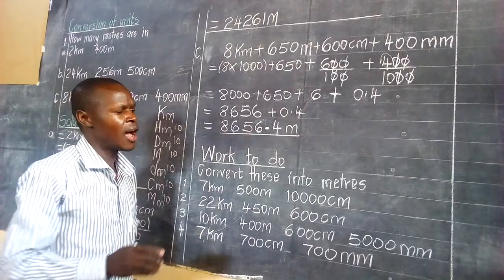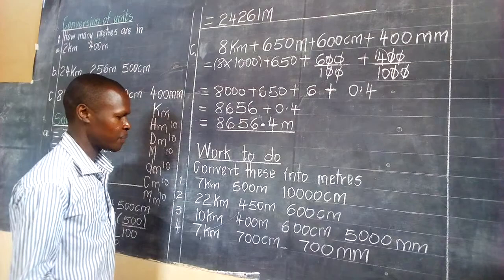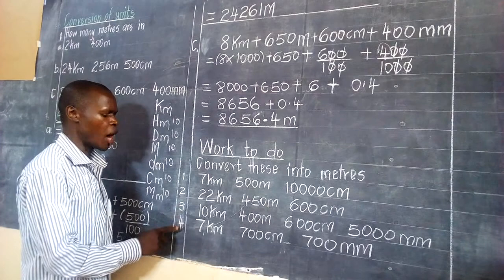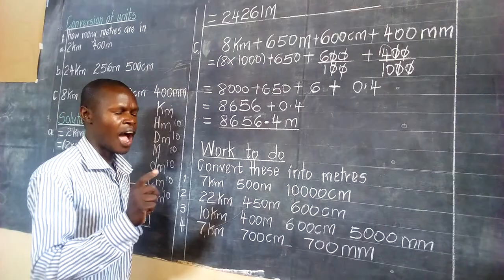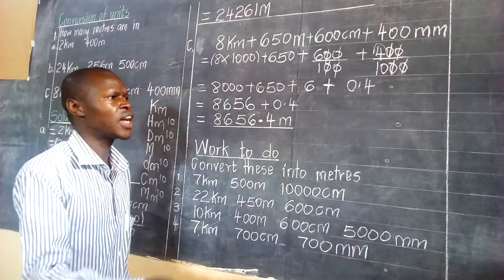Using the same knowledge and procedure, I would like to give you some work to do. I would like you to convert these into metres: number one, number two, number three, and number four. Do the work well and clearly, arrange the work well, then ensure that your teacher gets the work for marking. I wish you well. May God protect you.